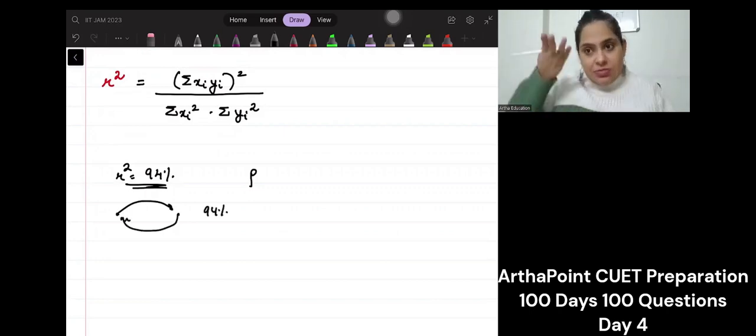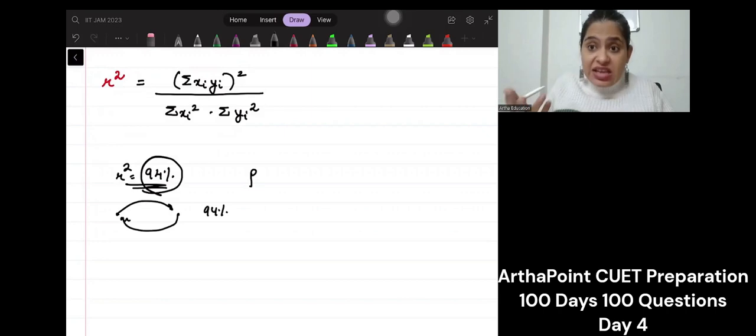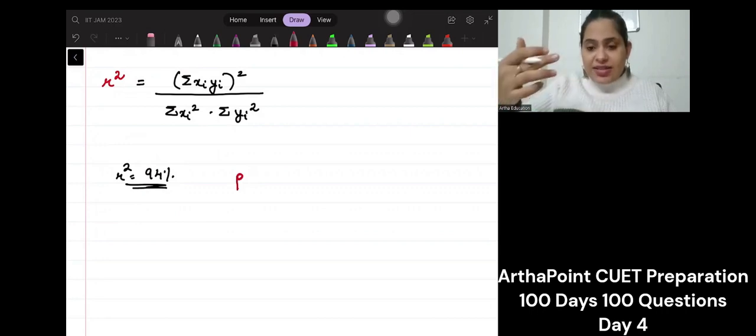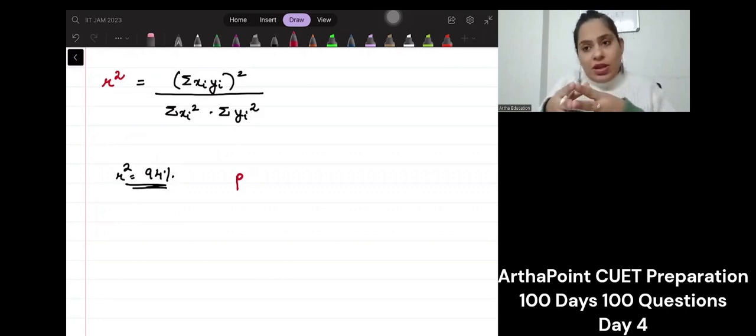When one variable will change, the other will vary by 94 percent. This is what correlation coefficient means. So when I talk about correlation coefficient in general terms, it means I am asking what is the relationship, what is that number which gives me the strength of the linear relation between two variables. Please write this down.